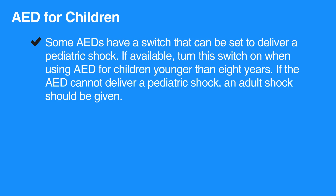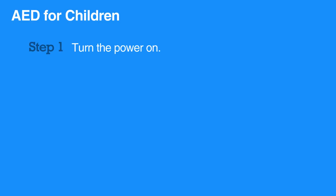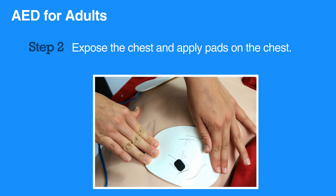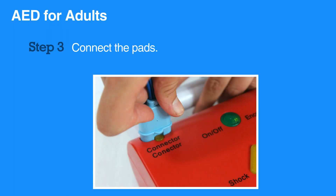If the AED cannot deliver a pediatric shock, an adult shock should be given. To use an AED on a child, first turn the power on. Expose the child's chest, then apply the pads. Ensure that the pads do not touch. Connect the pads to the AED. Clear the child and analyze the rhythm.